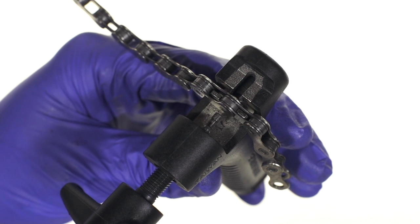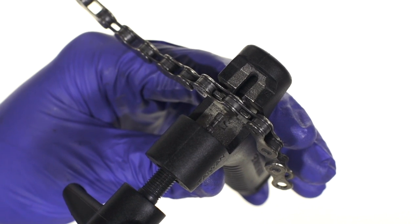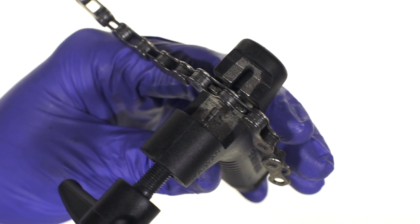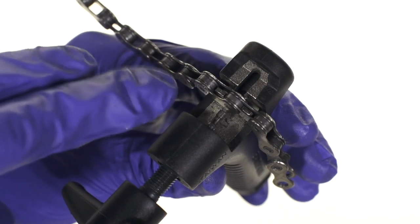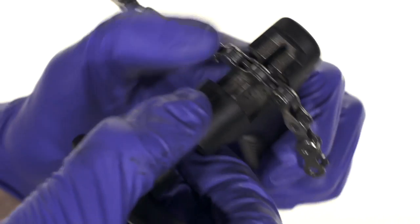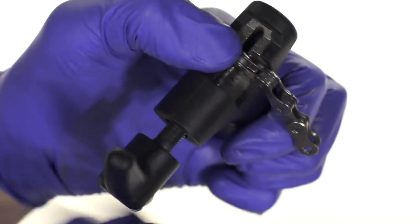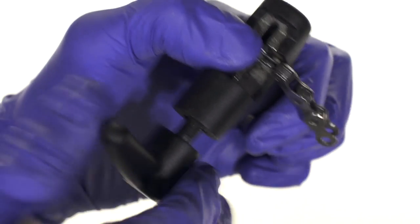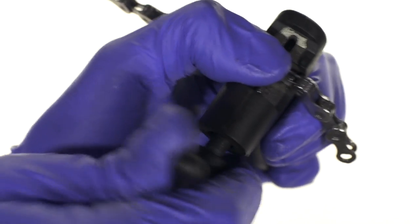Now in this scenario, let's say that you don't have another master link to put into the chain. So we need to preserve this pin that we're pushing out so that we can reuse it to put it back together. So what we're going to do is we're only going to push the pin out most of the way, but not all of the way.